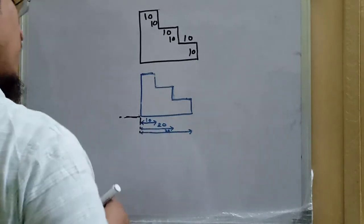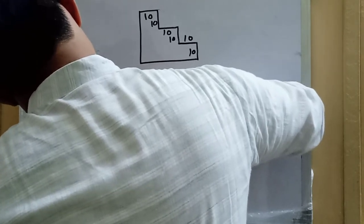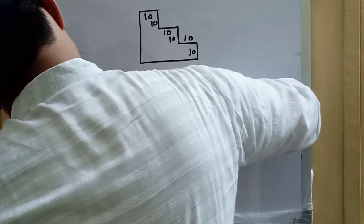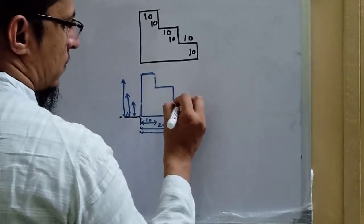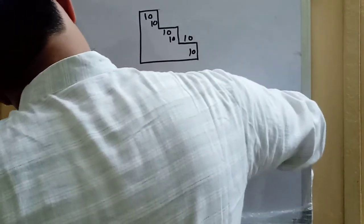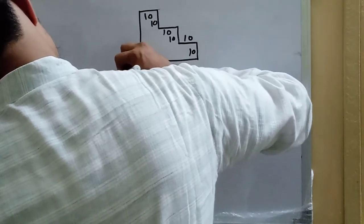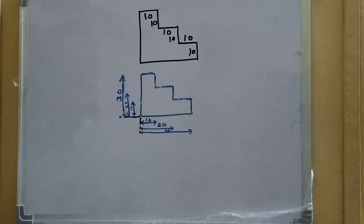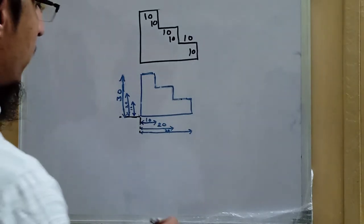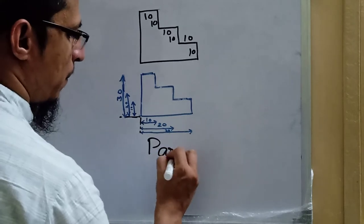In the vertical direction we follow the same approach: this is 10, then 10 plus 10 equals 20, and finally 10 plus 10 plus 10 equals 30. So we write 10, 20, and 30, and all these dimension lines are parallel to each other. You can use a drafter to make them parallel when drawing.